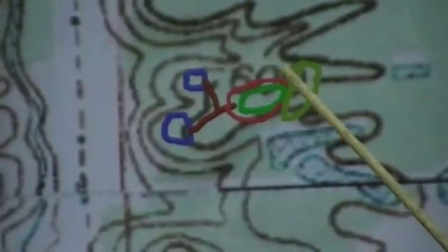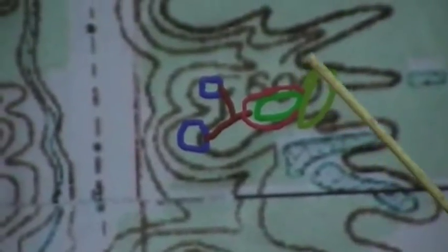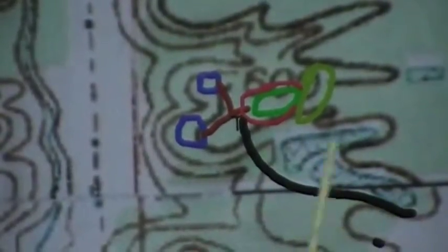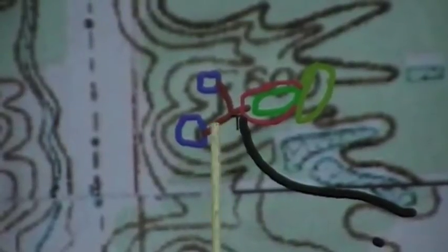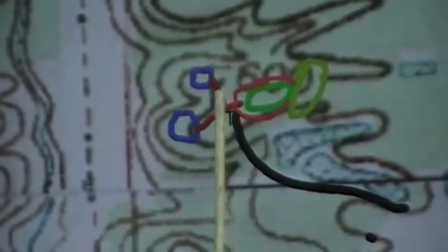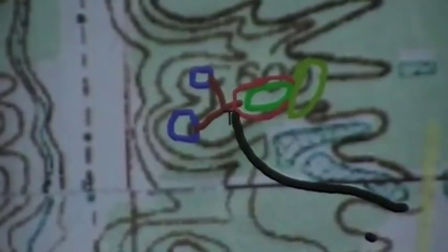And then you will also, after this food plot is established, want a buck sneak trail around that. And here is the hunter entry, and that T is where the tree stand is, and that's where everything comes together.